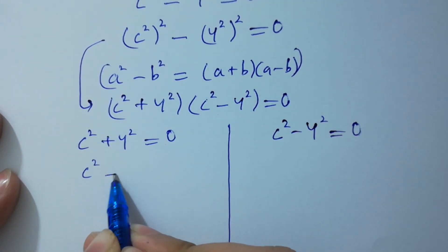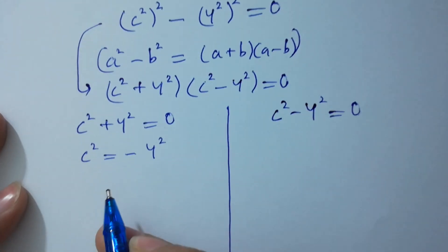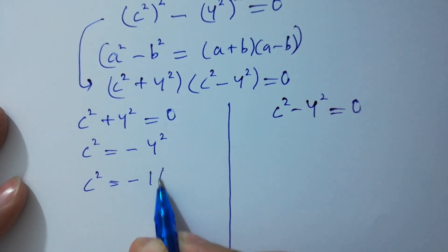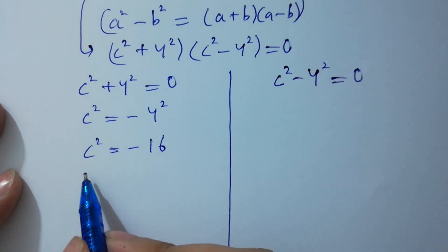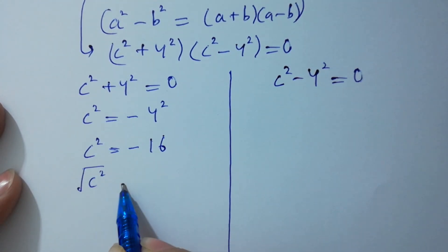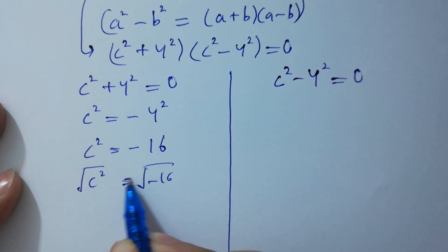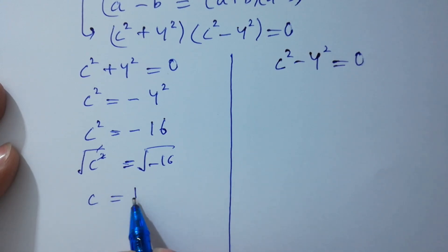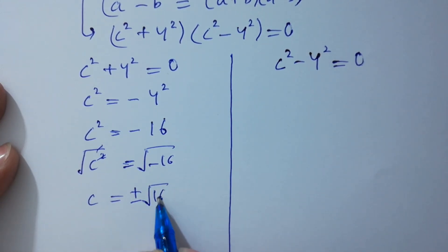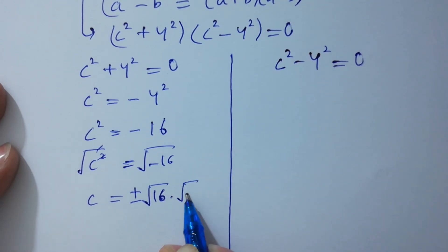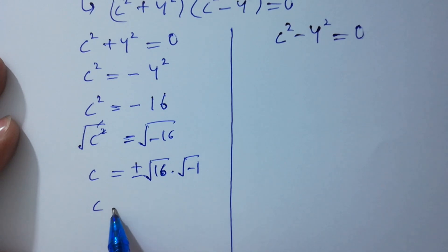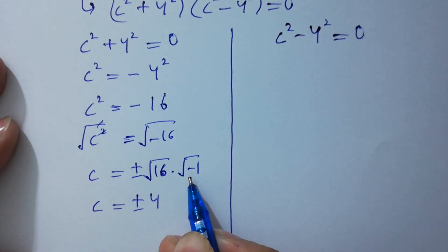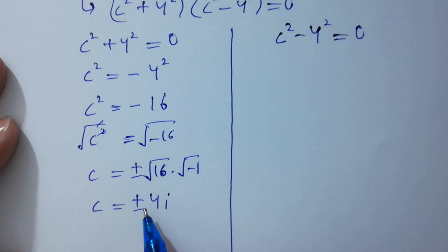From c squared plus 4 squared equals 0, we get c squared equals minus 4 squared, which is minus 16. Taking square root on both sides, the square cancels with the square root: c equals plus or minus the square root of 16 times the square root of minus 1, giving c equals plus or minus 4i, since the square root of minus 1 is i from complex numbers.